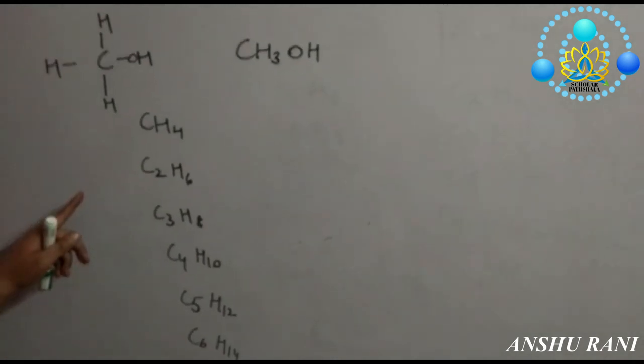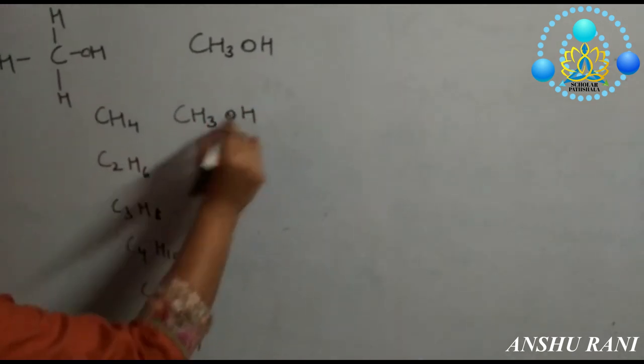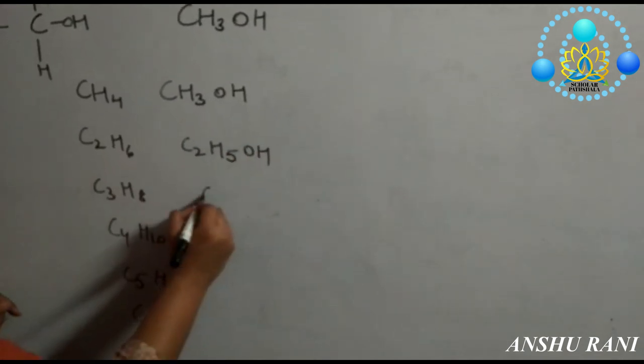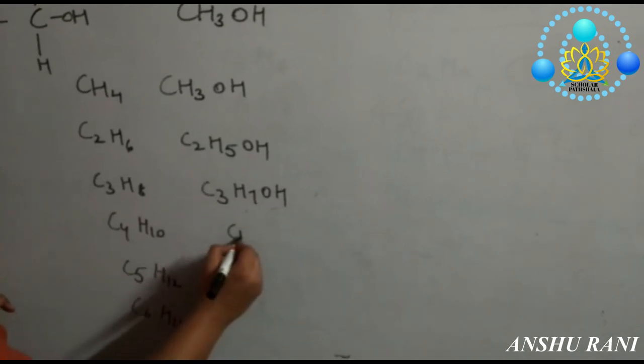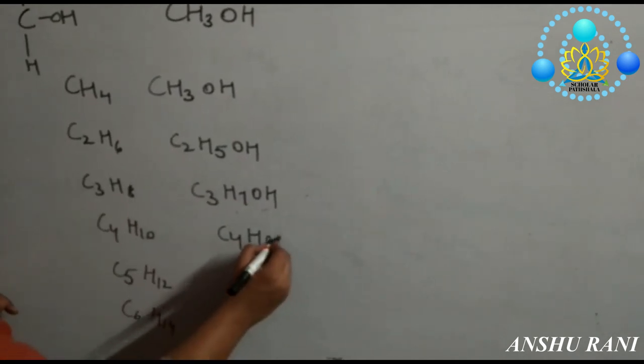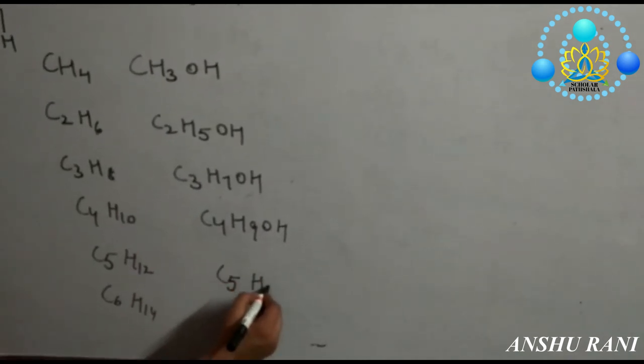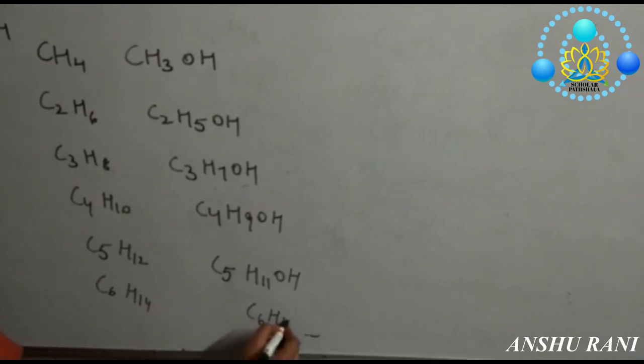Then replace one of the hydrogen atoms by OH group. It will become CH3OH, C2H5OH, C3H7OH, C4H9OH, C5H11OH, C6H13OH.